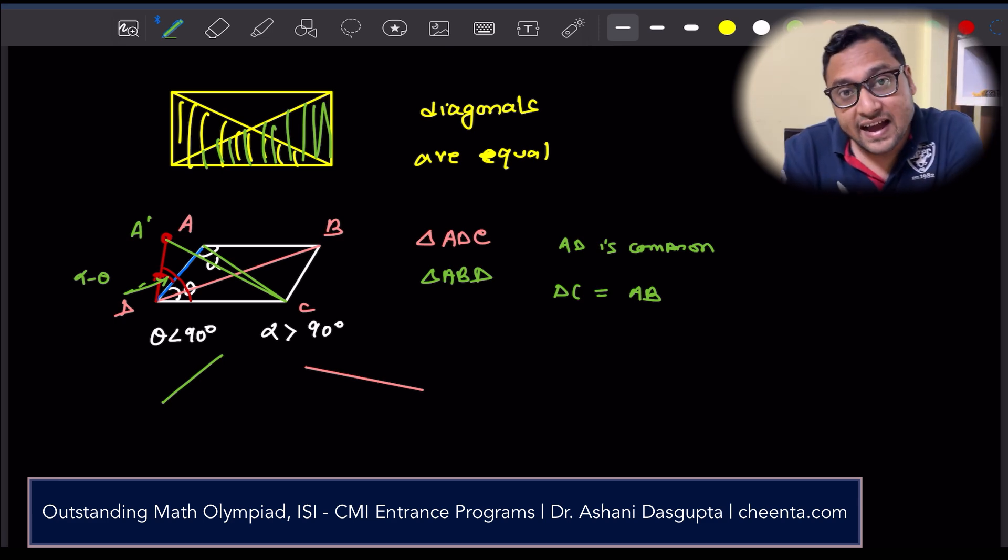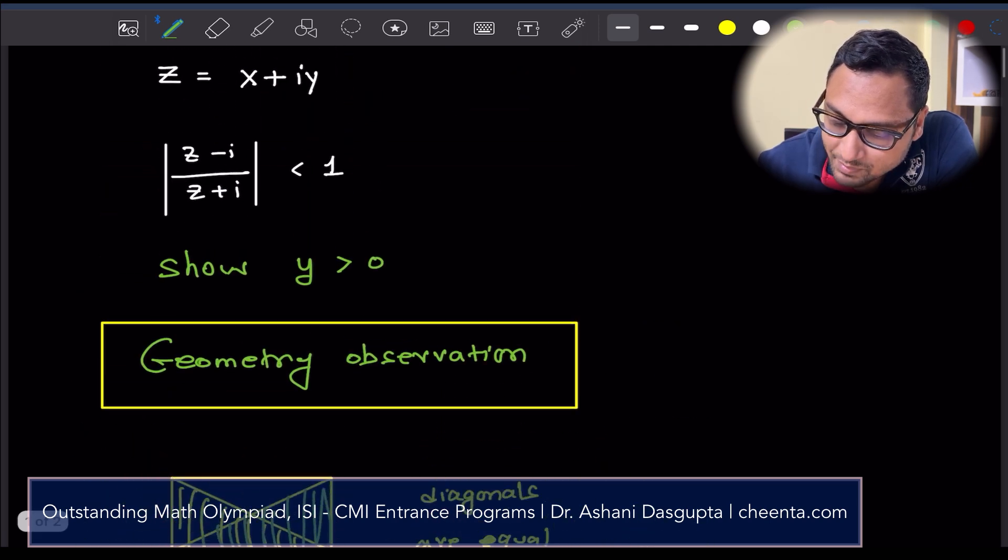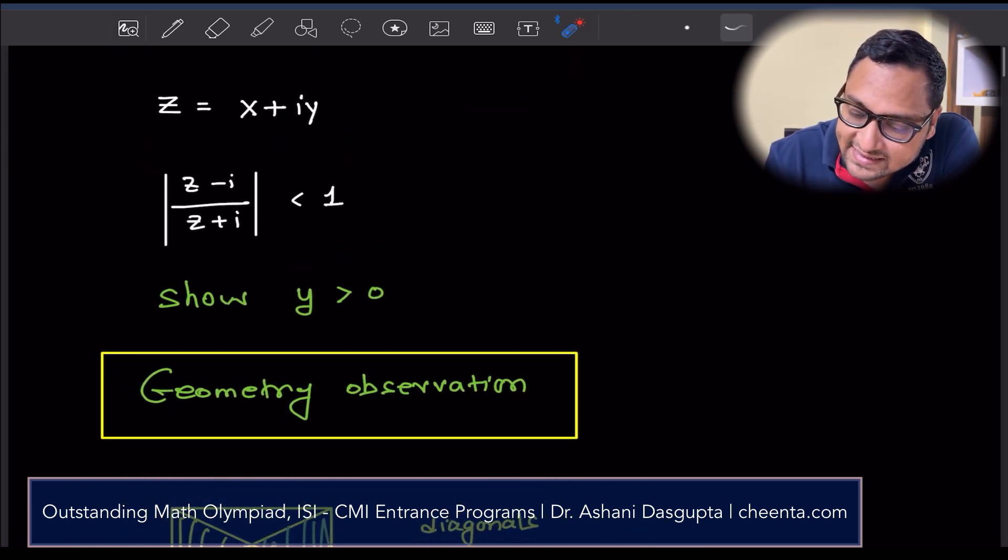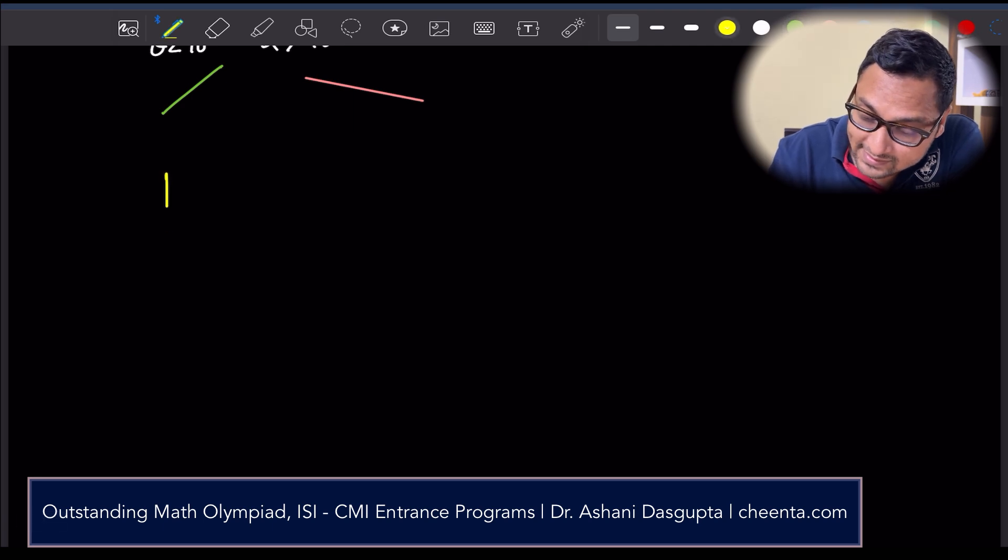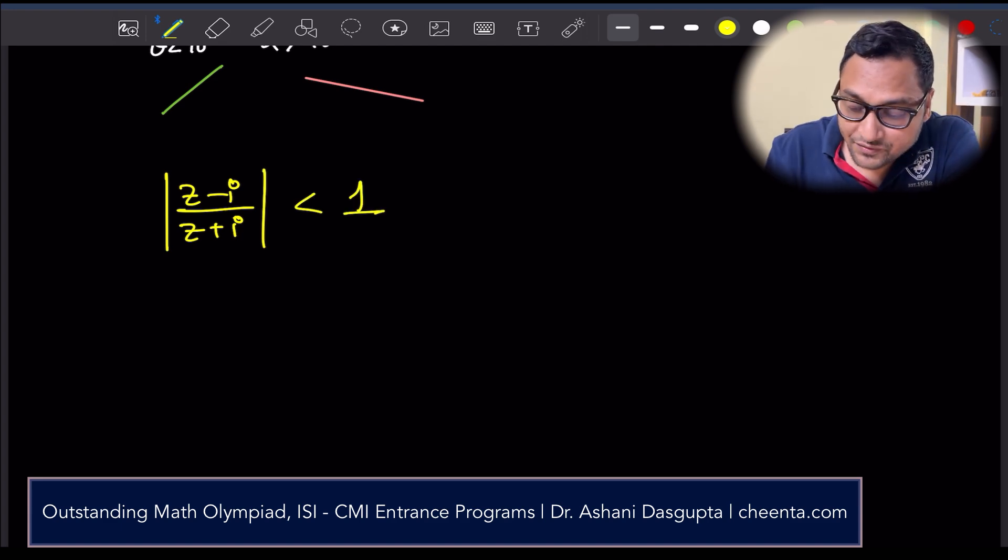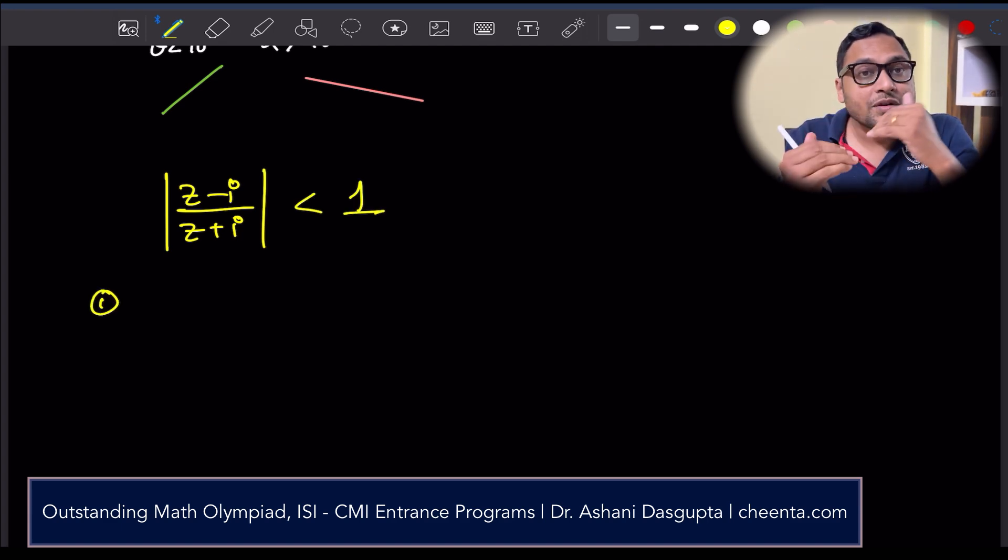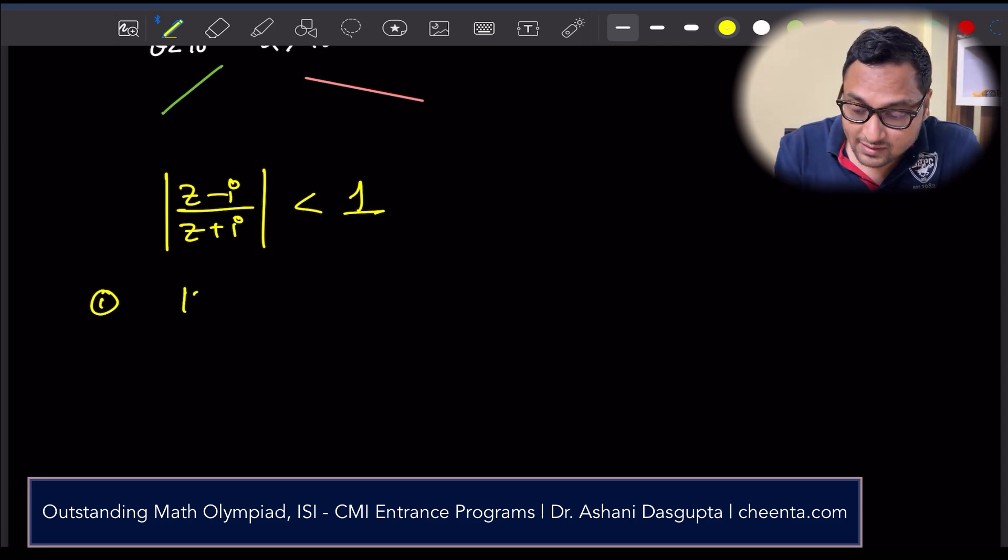Keep this geometry fact in mind and with this, we can actually solve the problem. What is the problem again? It says that the absolute value of (z minus i) divided by (z plus i) is less than 1. Let me write it one more time. The first thing we will do, we can distribute the absolute value. |z minus i| divided by |z plus i| is less than 1.